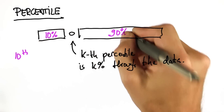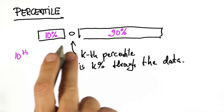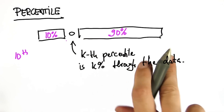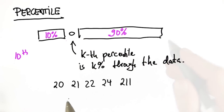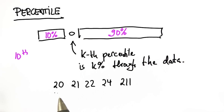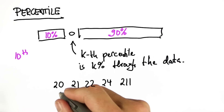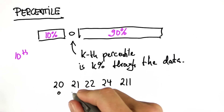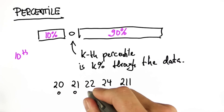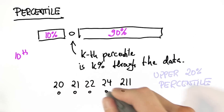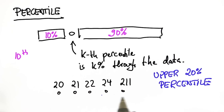And it can be applied on one side, or it could be applied on both sides. For our age example, removing the upper 20th percentile will remove what exact data items here. Check the ones that will be removed.